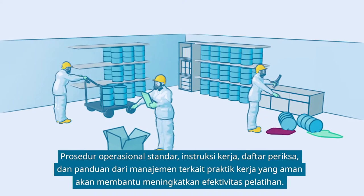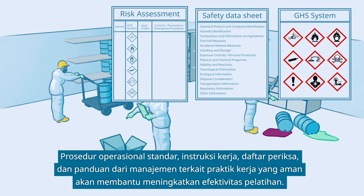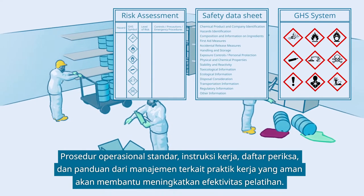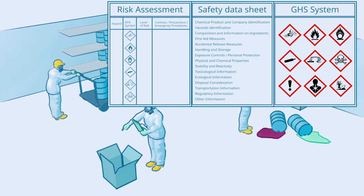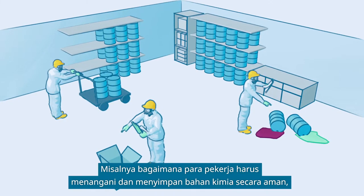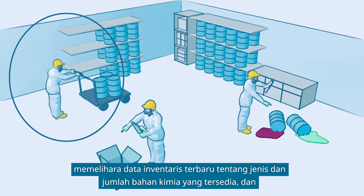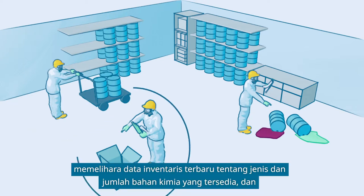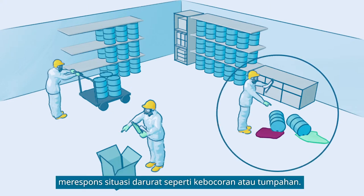Standard operating procedures, work instructions, checklists, and guidance by the management on safe work practices will help to reinforce the training lessons — for example, how workers should safely handle and store chemicals, maintain updated inventory records on types and amounts of chemicals being stored, and respond to emergencies such as a leak or spillage.